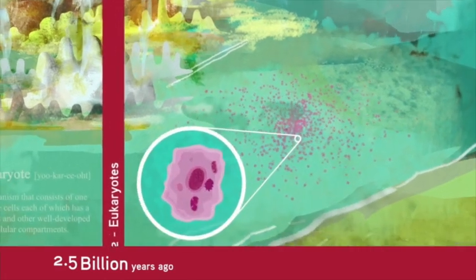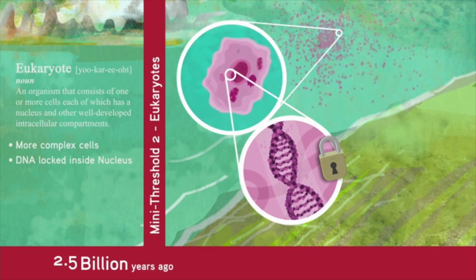Mini-threshold 2 is the emergence of eukaryotes, about 2.5 billion years ago. These are more complex cells whose DNA is locked up inside a special case called the nucleus, which help protect and preserve vital genetic information.